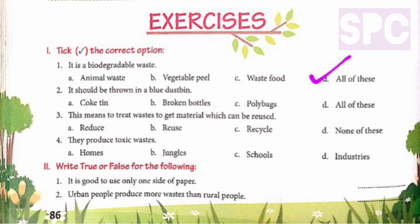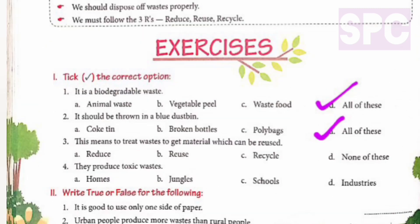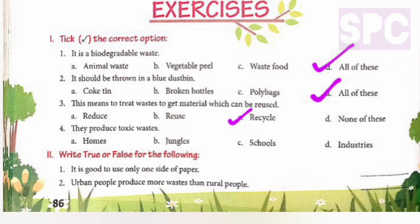Part two - What should be thrown in a blue dustbin? Options: coke tin, broken bottles, poly bags, all of these. The answer is option D - all of these. Coke tins, broken bottles, and poly bags are all non-biodegradable materials and do not decompose easily. Part three - What means to treat waste to get materials which can be reused? Options: reduce, reuse, recycle, none of these. The answer is option C - recycle.